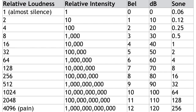But intensity gives us rather big numbers. So to simplify this, a bell just counts the number of zeros after the 1. But this only gives us 12 bells before the volume causes pain, which is too small a number. So we created the decibel, which is just a bell times 10.